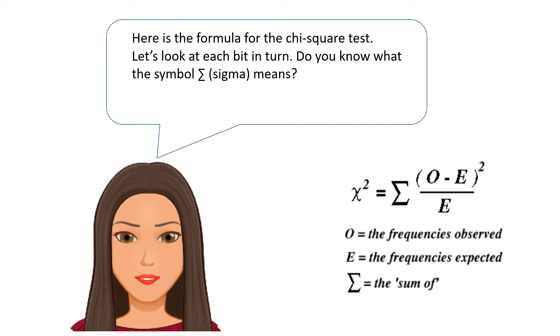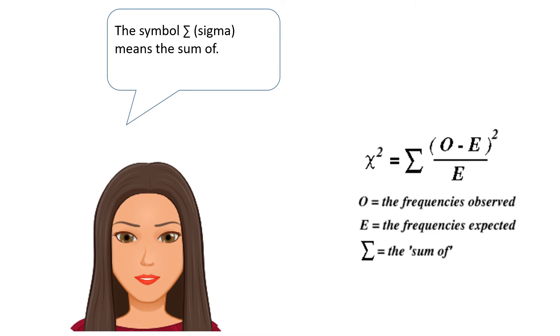Here's the formula for the chi-squared test. Let's look at each bit in turn. Do you know what the symbol sigma means? The symbol sigma means the sum of.